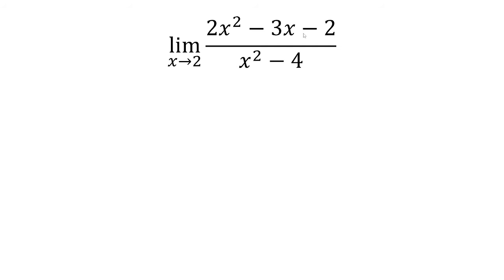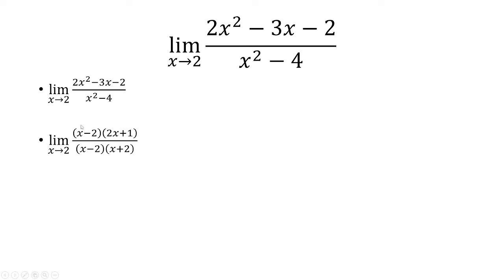We want the limit as x approaches 2 of this expression. If we plug in x equals 2, we get 0 over 0, so we have to factor this out. The top factors into x minus 2 times 2x plus 1. The denominator is x minus 2 times x plus 2. These are going to cancel, and when I plug in x equals 2, I get 5 over 4 as my answer.